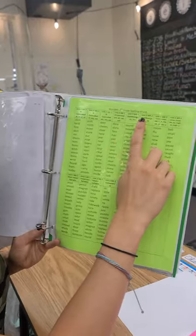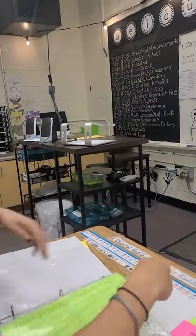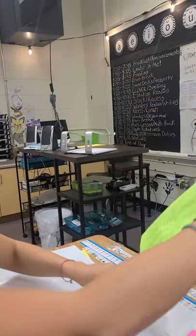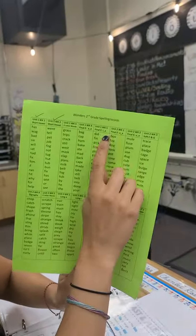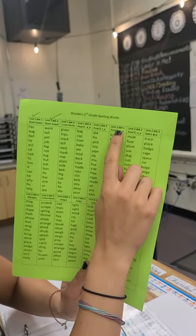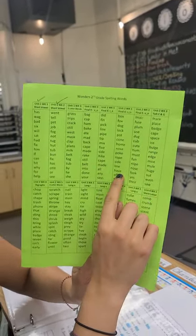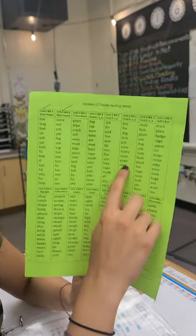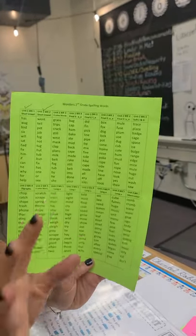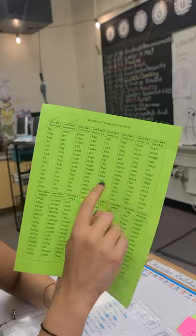Then we have our spelling words. So we are on unit, this is backwards. Sometimes they might be backwards and that's all right. But we are on unit two, week one. We are actually going to be on this set of spelling words for this week and next week. Just how things fall in our wonders reading companion. If you want, you can also check mark boxes to see which one you're on.